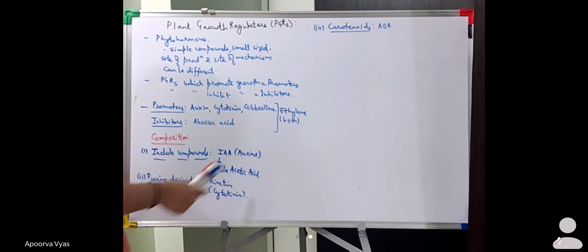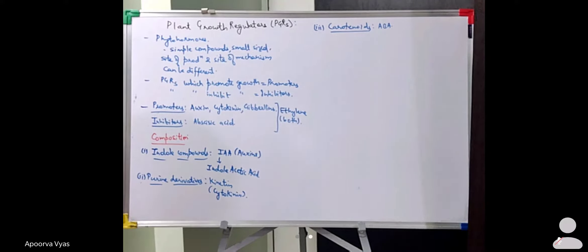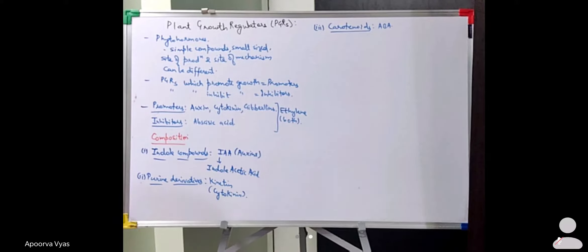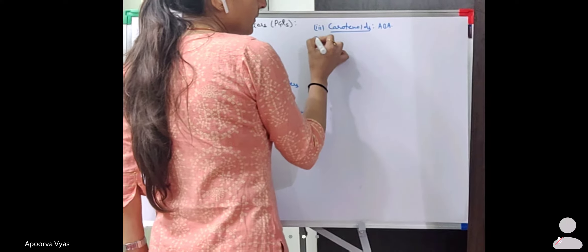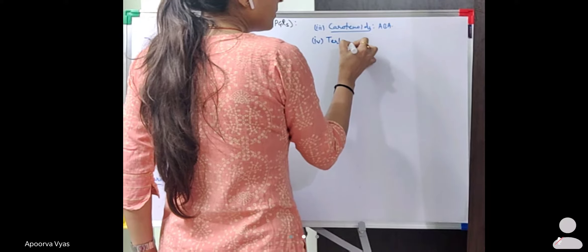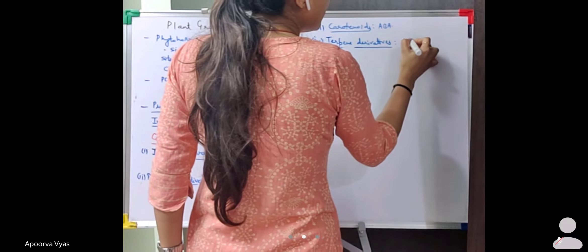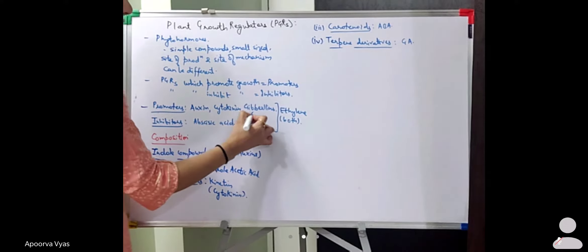Indole acetic acid is an auxin. Next, purine derivatives include kinetin, which is a cytokinin. Then carotenoids give us ABA — abscisic acid. And terpene derivatives include GAs, meaning gibberellins.